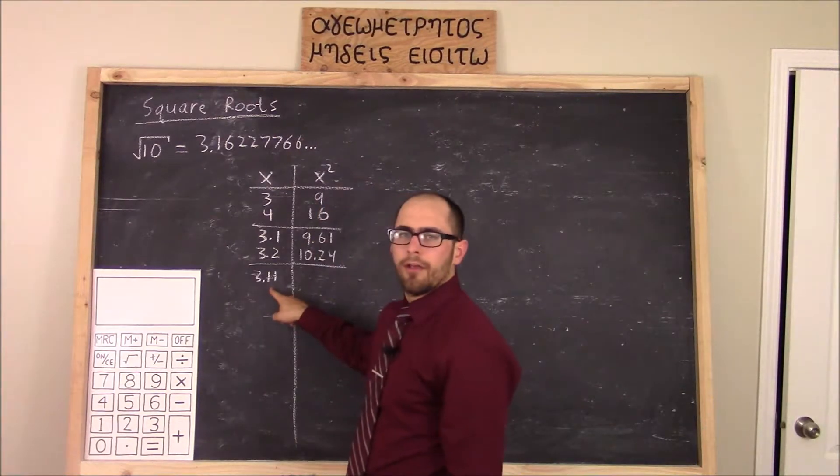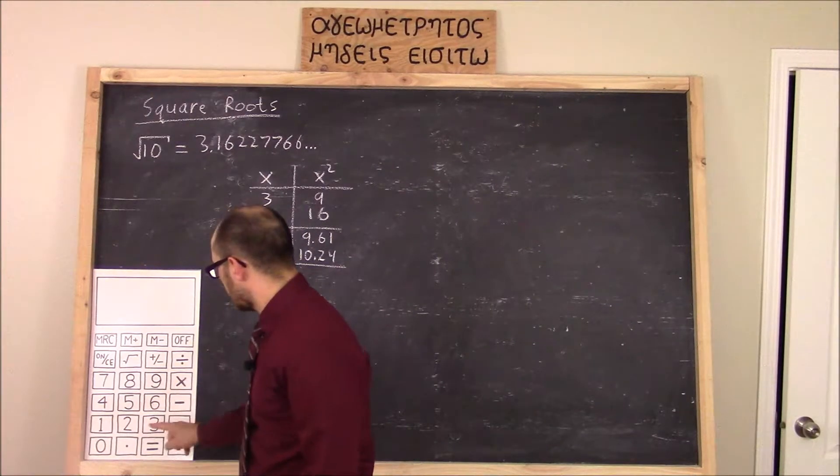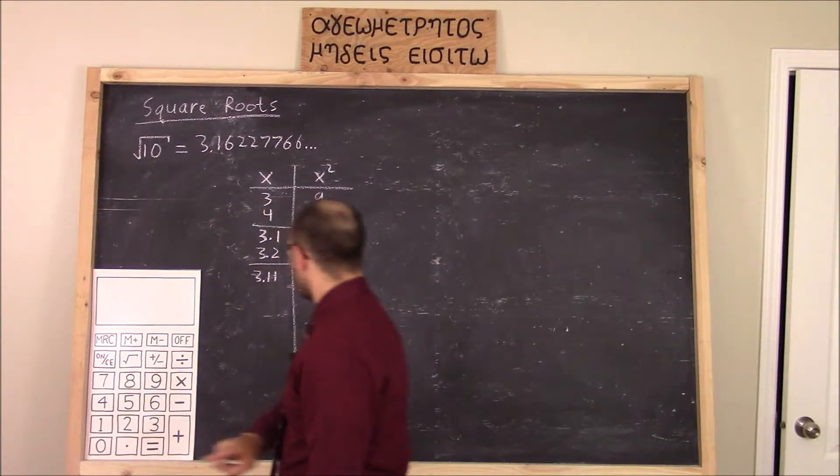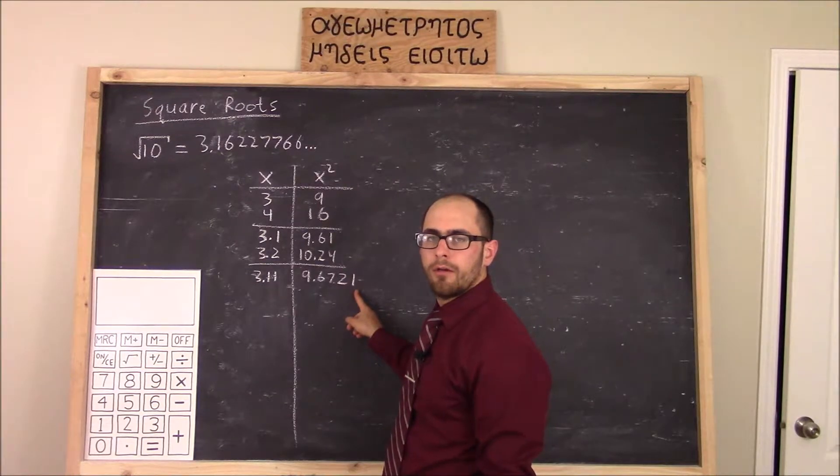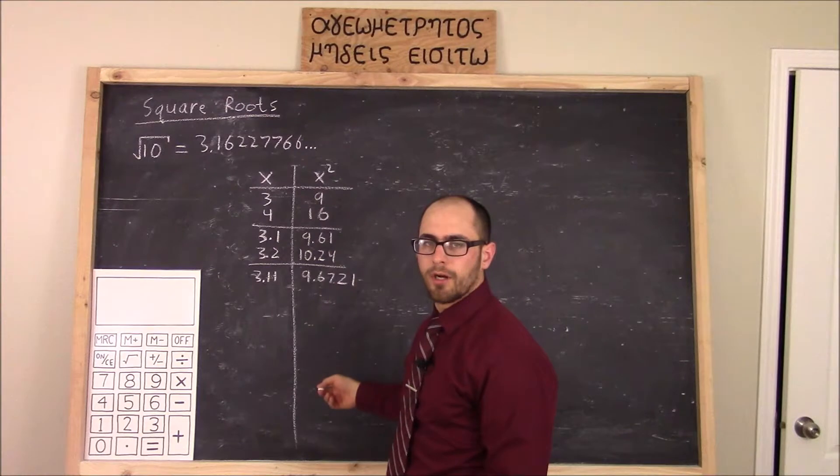Let's try 3.11. 3.11 times 3.11 equals 9.6721. Go ahead, try for yourself on your own calculator to verify that my numbers are correct.